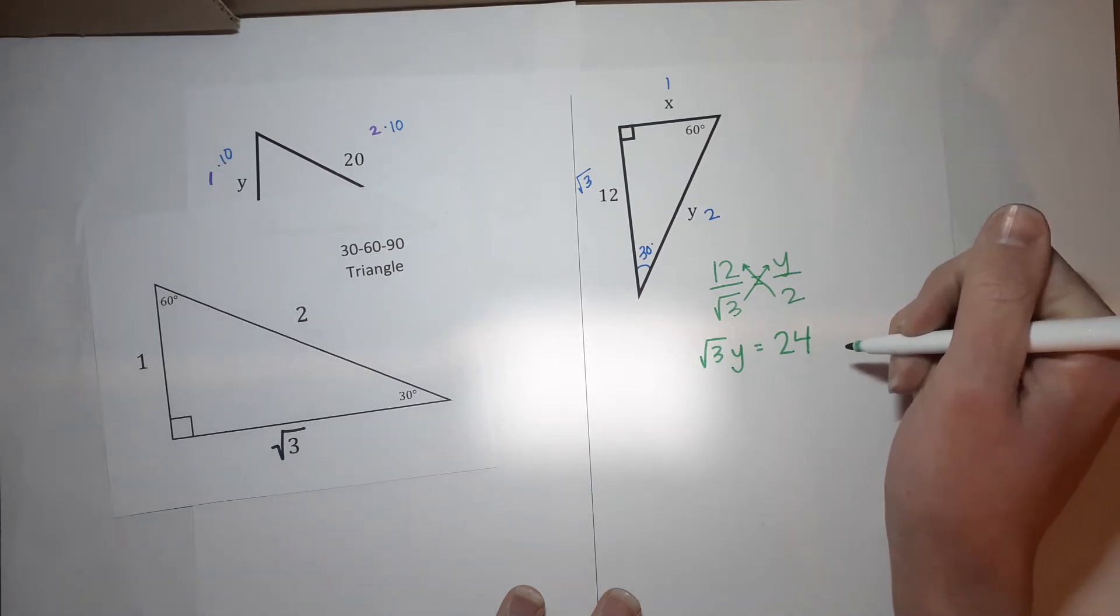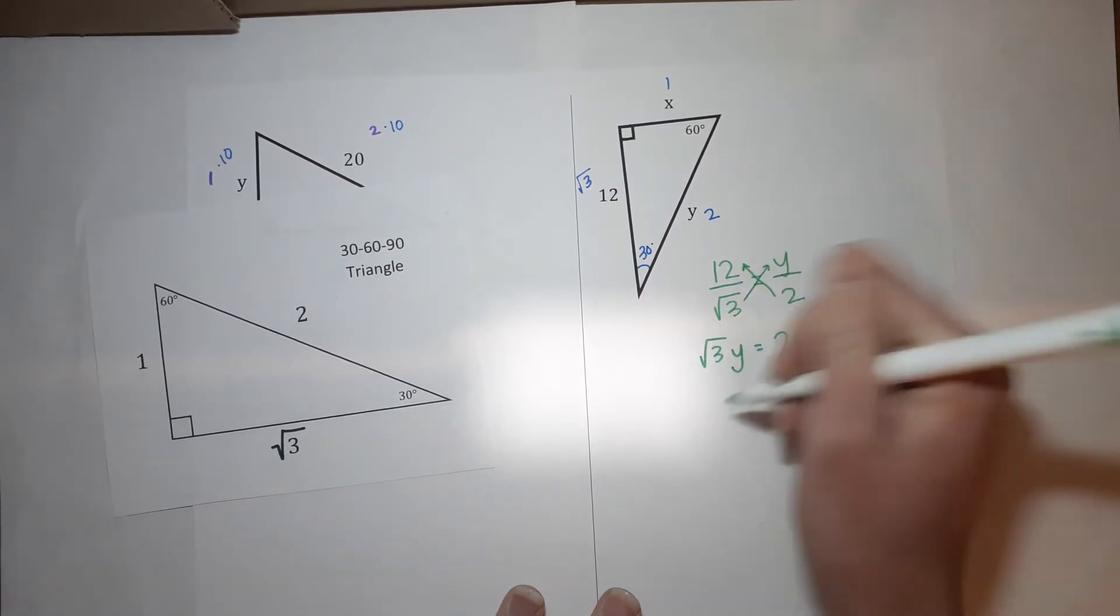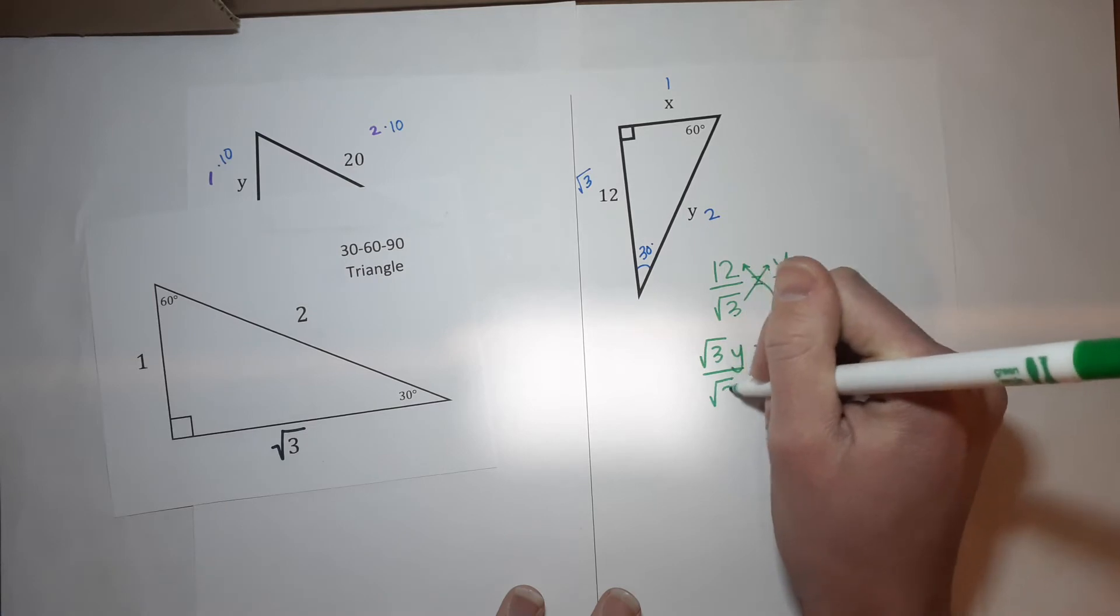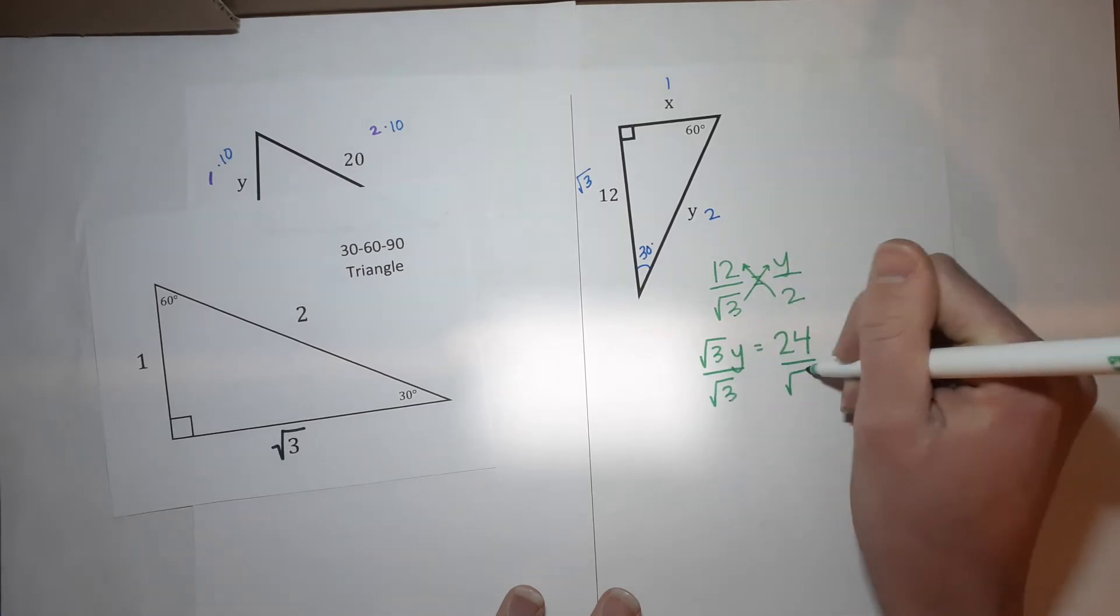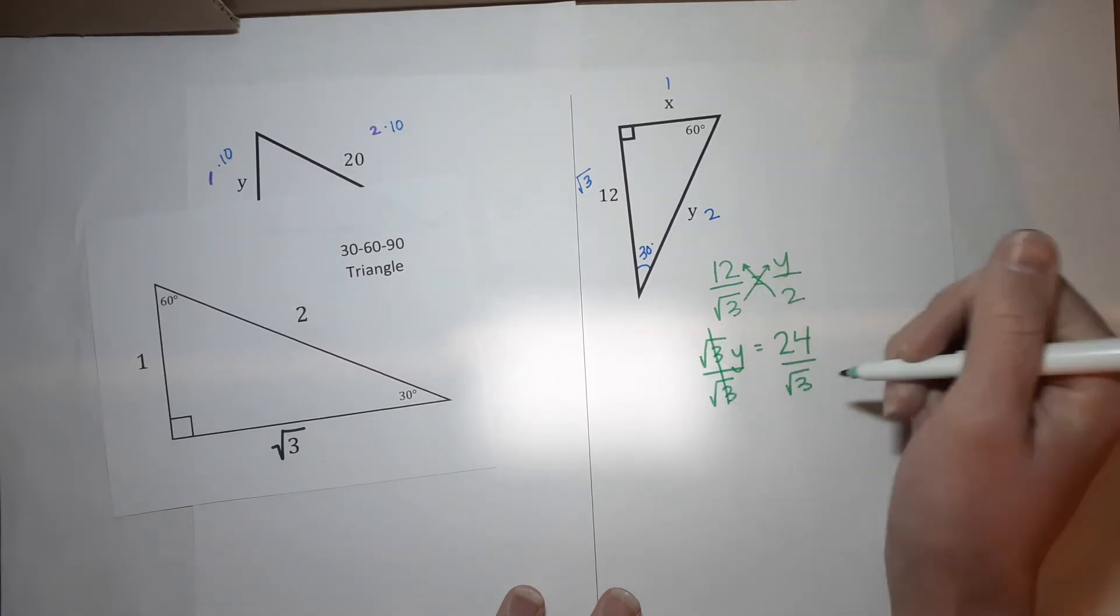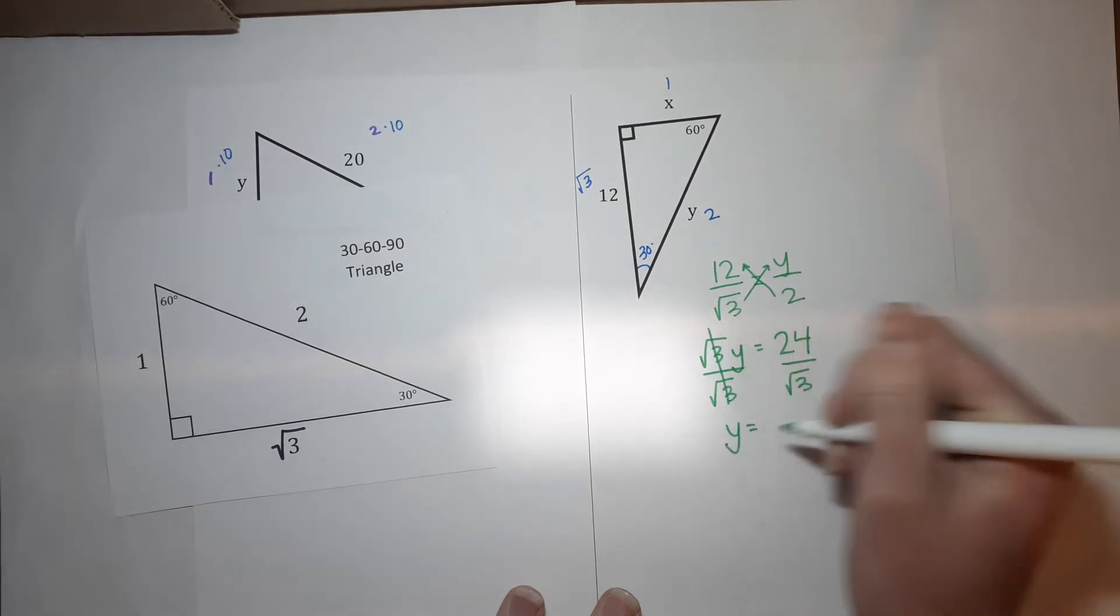All right. Now what? We are going to, we want y alone, so we're going to divide off the square root of 3 on both sides. Those go away. So I'm left with y equals 24 over the square root of 3.